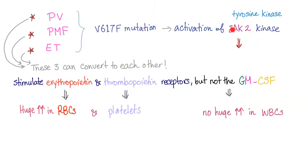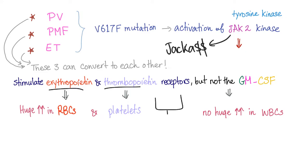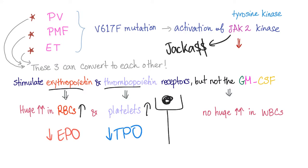What happens when you activate the JAK2 kinase? JAK2 is very manipulative. It will stimulate erythropoietin and thrombopoietin receptors, leading to overstimulation and increased numbers of red blood cells and platelets. If you have lots of red blood cells, there is no reason to produce EPO, and if you have lots of platelets, there is no reason to produce thrombopoietin.